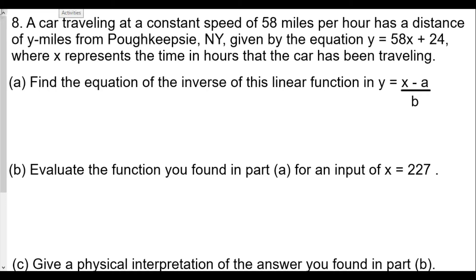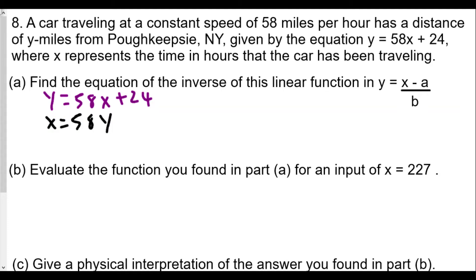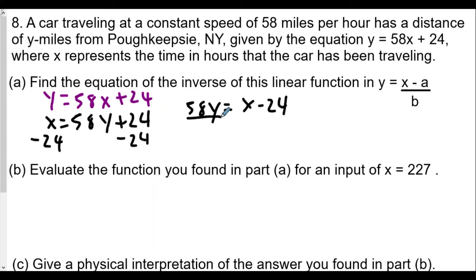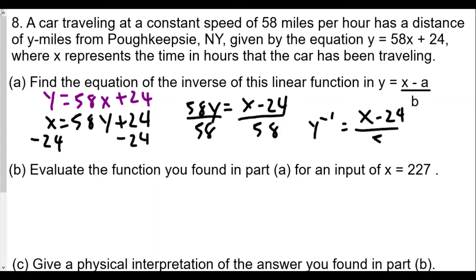We take our original equation, y equals 58x plus 24, and switch the x and y values, giving us x equals 58y plus 24. We subtract 24 on both sides to get y by itself, so 58y equals x minus 24. Then we divide both sides by 58, giving us the inverse: y⁻¹ equals x minus 24 over 58.